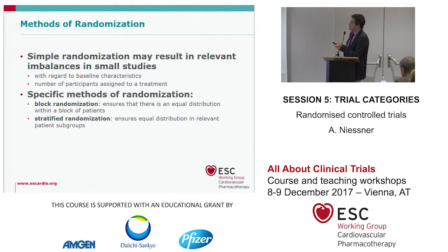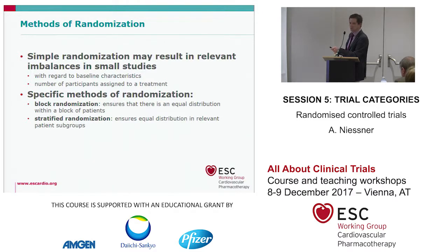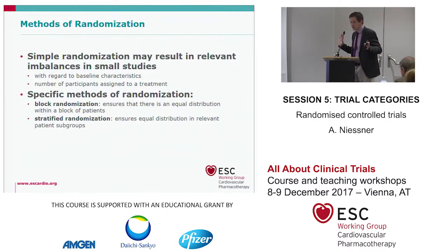Simple randomization can result in relevant imbalances in small studies, regarding baseline characteristics or the number of participants assigned to a treatment. If you have a study with 1,000 people it's fine, but if you have only 200, you have to be careful about simple randomization.